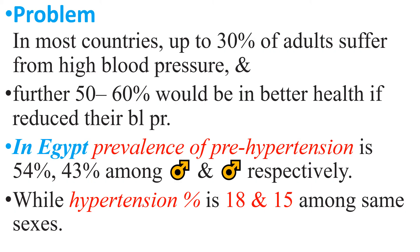What is the magnitude of the problem? In most countries, up to 30% of adults suffer from high blood pressure, and more than 50% would be in better health if they reduced their blood pressure. In Egypt, prevalence of pre-hypertension is 54% and 43% among men and women respectively, while hypertension prevalence is 18% and 15% among the same sexes.